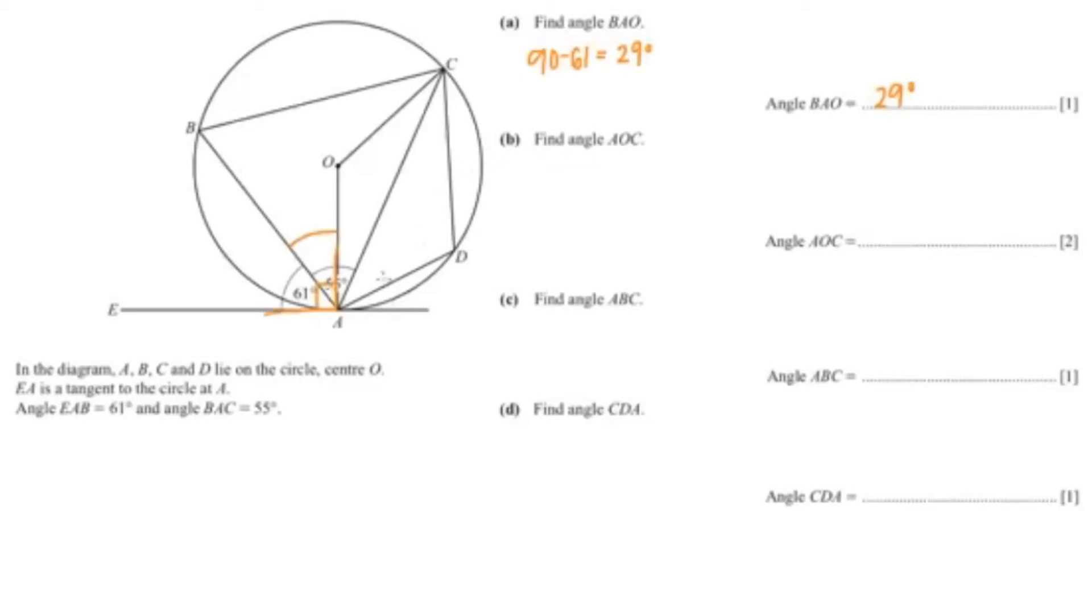Now the next question wants us to find angle AOC, and that is over here. So first, let's find this angle. To find this angle, we would just do 55 minus 29, which is 26.